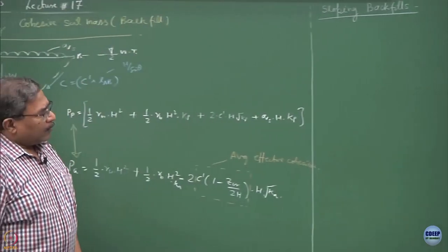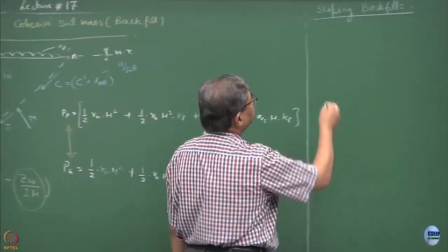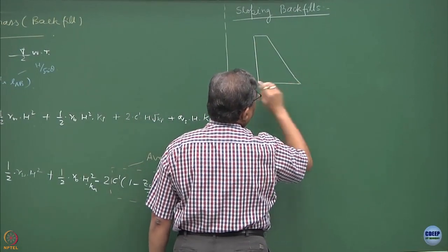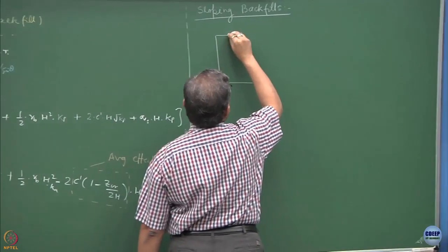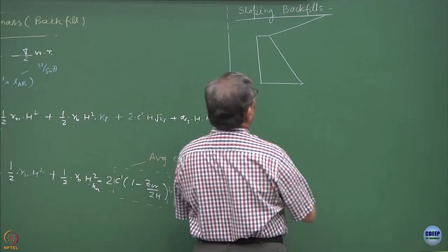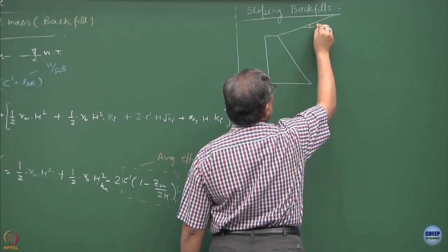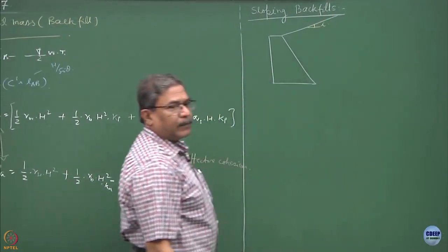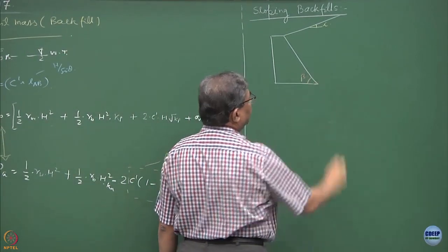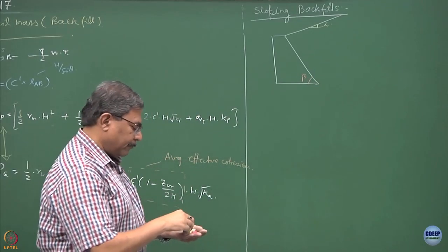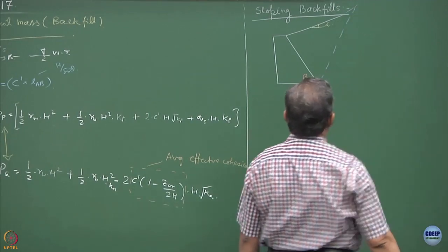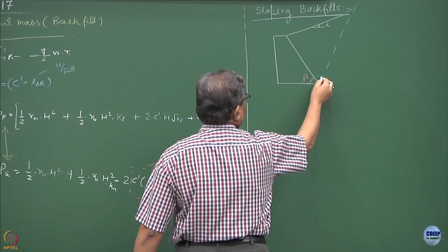A very complicated situation would be you have a sloping retaining wall and it is retaining a backfill at an inclination of i and this angle we can define as the slope of beta. The slip surface is going to be now like this, a complicated case.